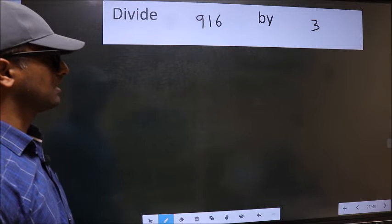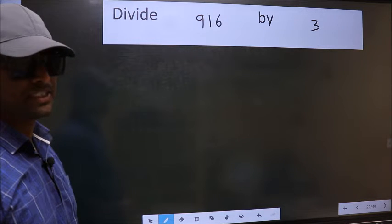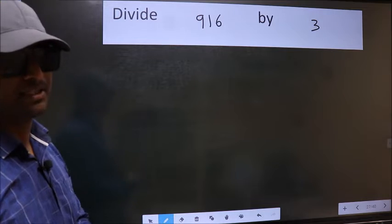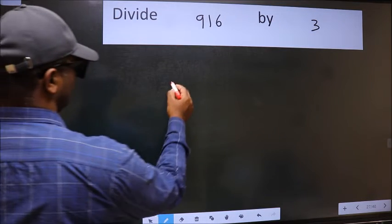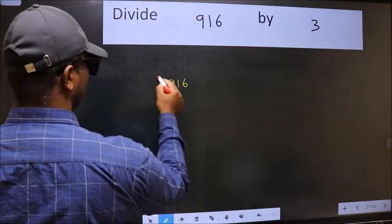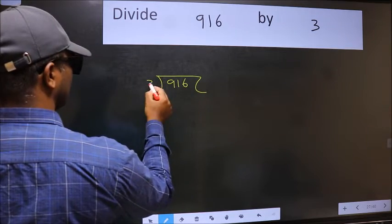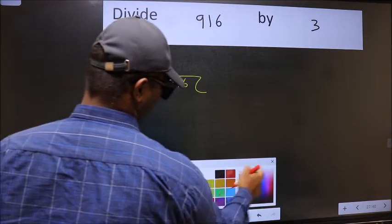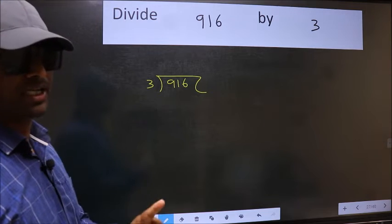Divide 916 by 3. To do this division, we should frame it in this way: 916 and 3 here. This is your step 1.